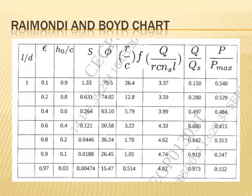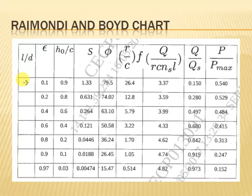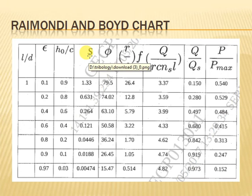We will now discuss the Raimondi and Boyle chart. The chart has various columns and rows. The first column is the L/D ratio — length of bearing upon diameter of journal. This table is presented for L/D ratio as 1. Next columns are epsilon (eccentricity ratio), HO upon C, Sommerfeld number, and so on. The values of these dimensionless parameters are available in the form of charts and tables for full as well as partial hydrodynamic bearings, for L/D ratios of 1/4, 1/2, 1, and infinity.